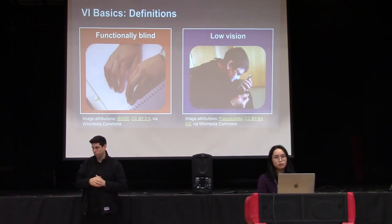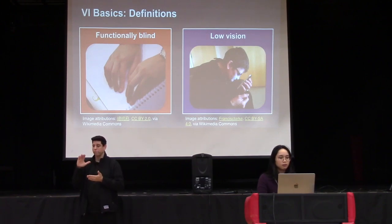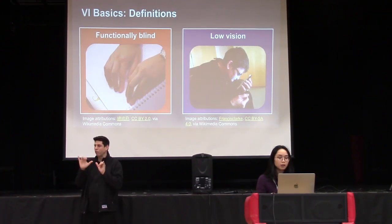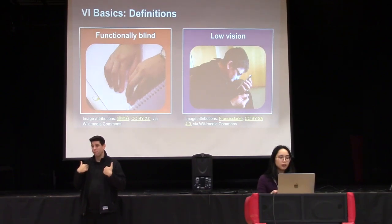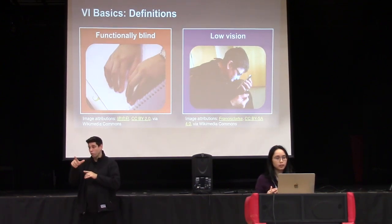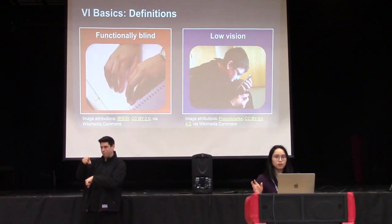Most students with visual impairments that you'll come across have low vision — a permanent and significant loss of vision that cannot be corrected and interferes with daily activities, including loss of acuity and/or visual field. It's better defined in terms of function rather than numbers. Although they might have visual impairment, they may still use remaining vision as a primary or secondary learning channel and might use a variety of tools to accommodate their remaining vision.